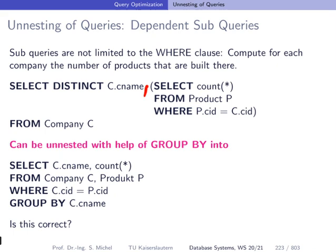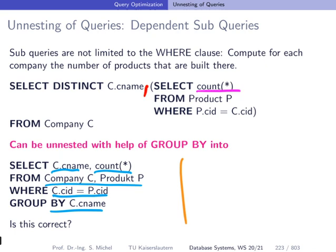How can we solve this? We join the company and product tables by company ID, then group by company name and return company name and COUNT. This is the intuitive way to write it, and both formulations look equivalent — but the question is whether they're really perfectly equivalent.